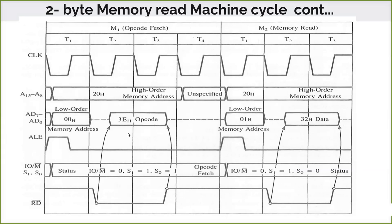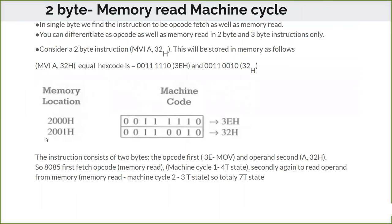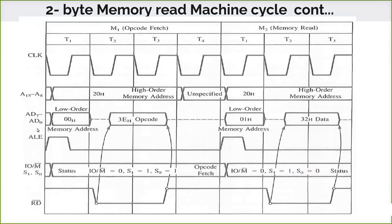The data 32 is present in the next memory location. After decoding the instruction it will not execute yet, because another memory location has to be read to get the next byte — only then can it complete the whole MVI A, 32 cycle. So the program counter is incremented and it initiates the next memory read. Address 2001 is placed: the higher order 20 and lower order 01 are placed on A8-A15 and A0-A7 respectively. The address latch enable goes high, and then IO/M-bar goes low indicating it is a memory read.